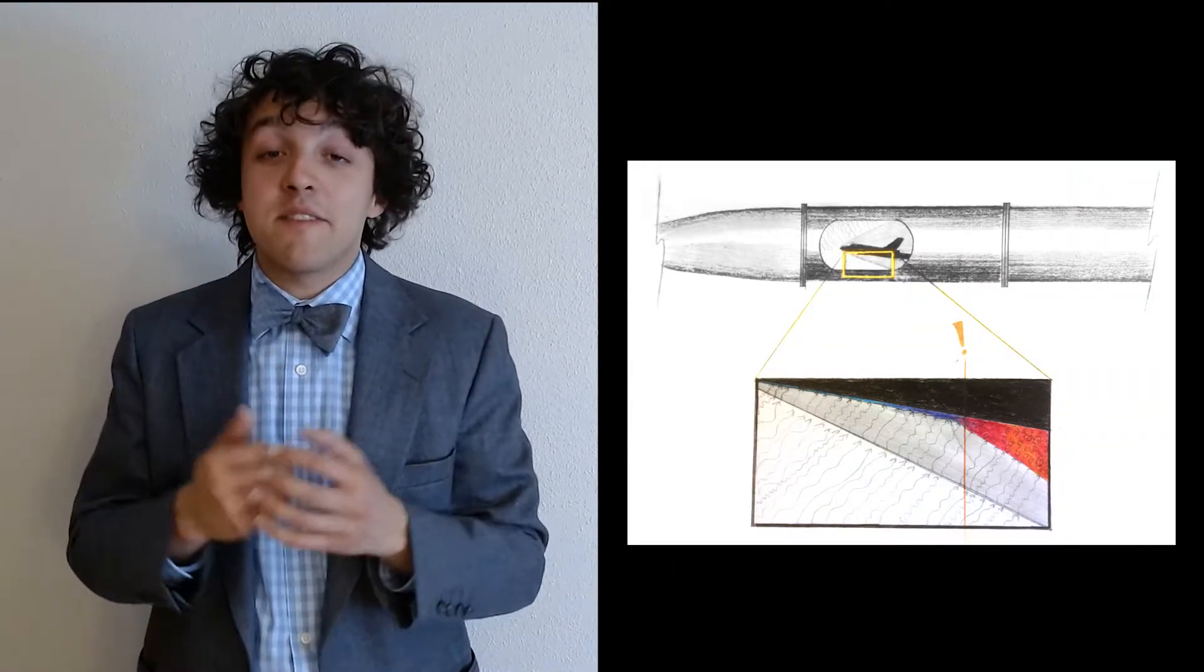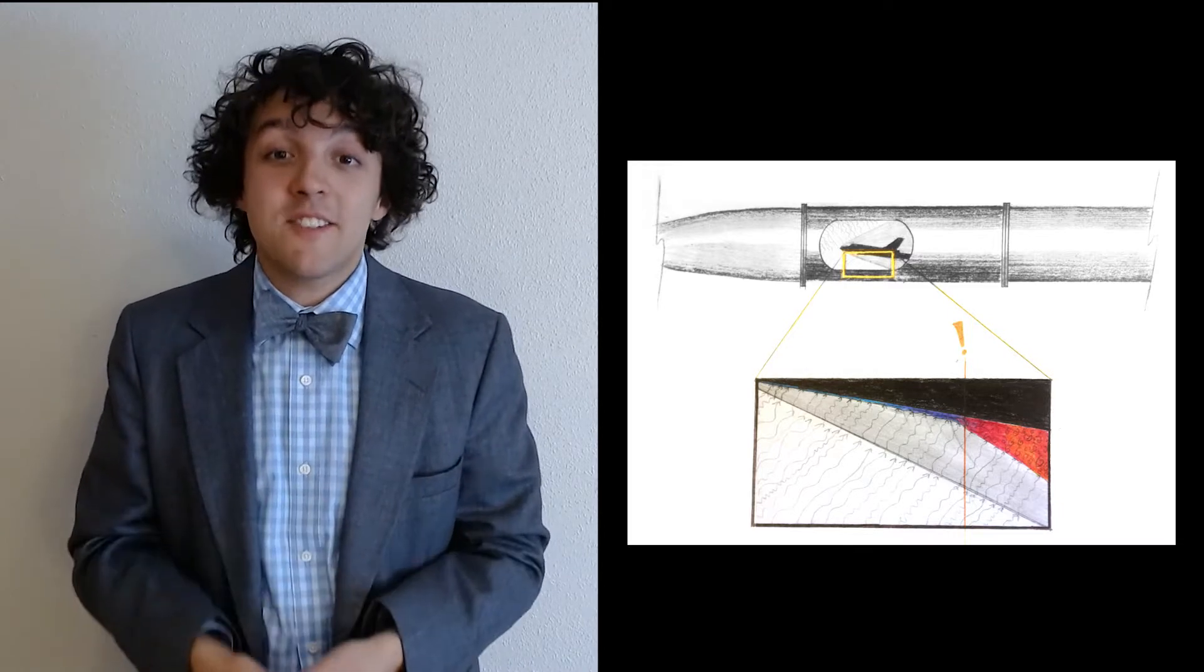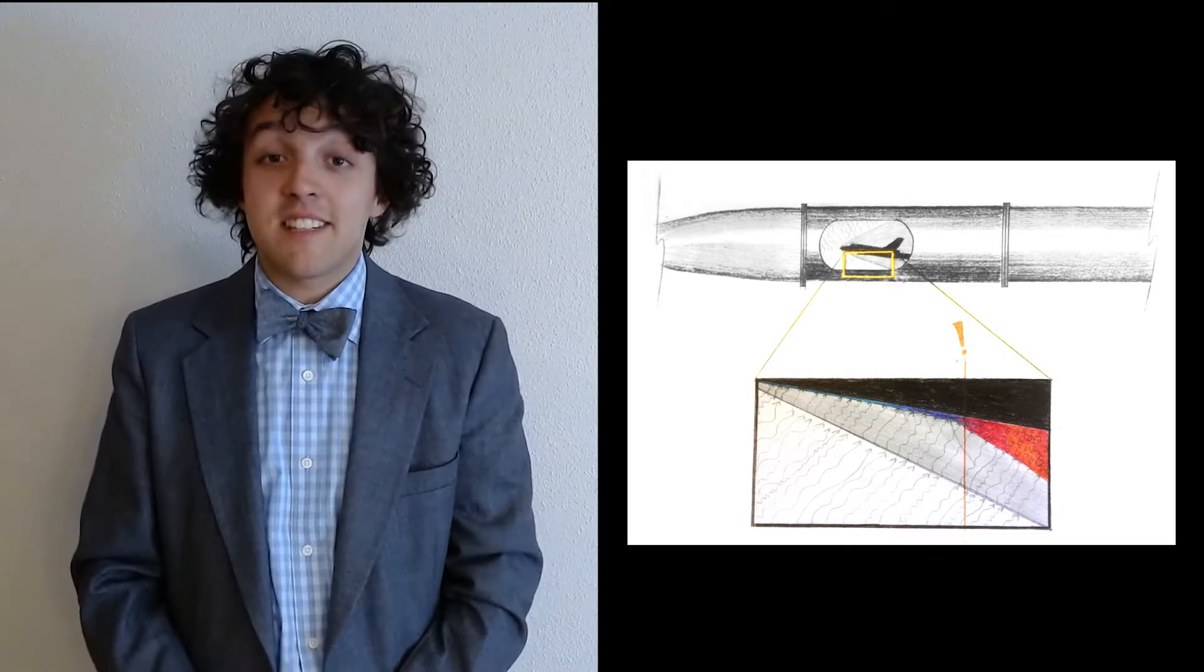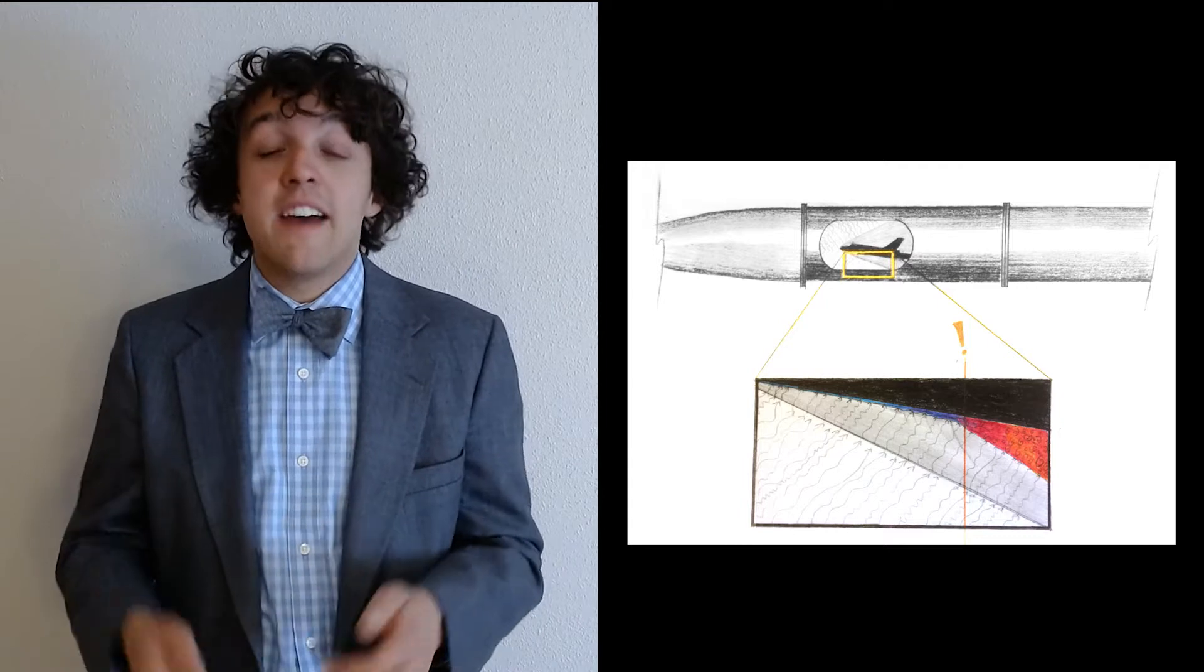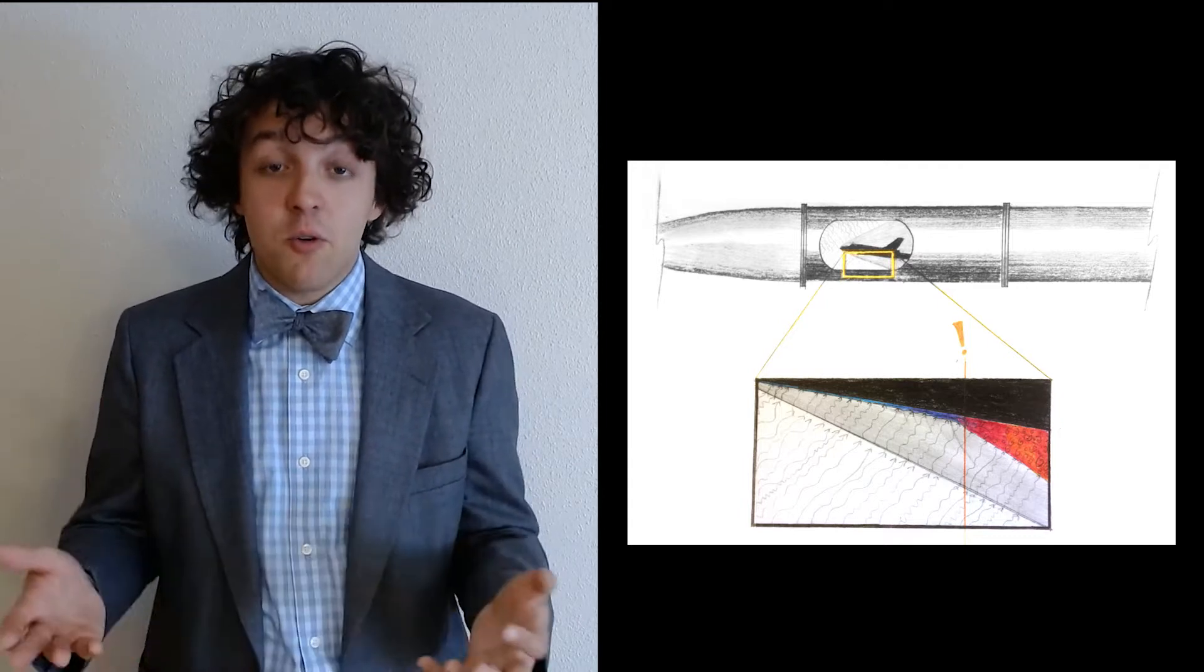60 years ago Yuri Gagarin became the first human to orbit the Earth. This was a turning point in history because it started to fundamentally change the way that we as humans thought about our role in the universe.